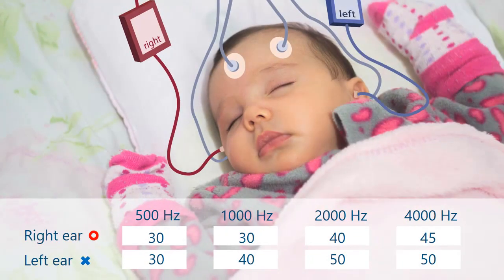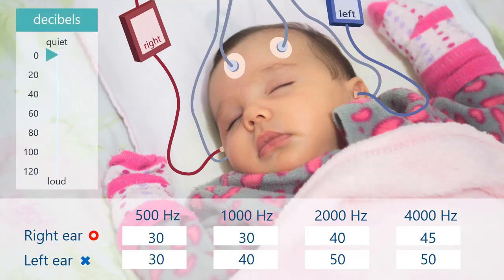With the ABR, we determined how loud sounds have to be for a baby to hear them. The numbers are in units called decibels. The higher the number, the louder the sound. And we know that most children hear sounds when they are quieter than 15 decibels.